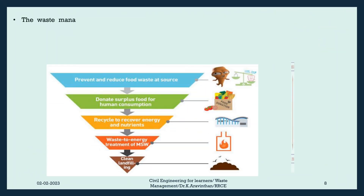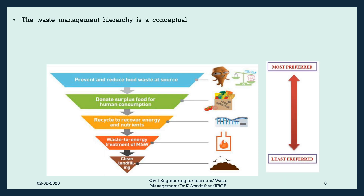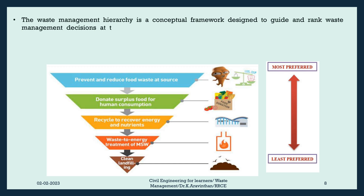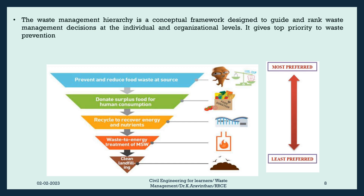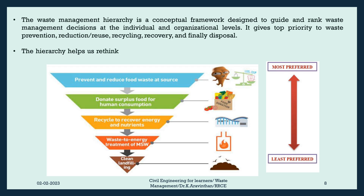The Waste Management Hierarchy is a conceptual framework designed to guide and rank waste management decisions at the individual and organizational levels. It gives top priority to waste prevention, reduction and reuse, recycling, recovery, and finally disposal. The hierarchy helps us rethink our relationship with waste based on five priorities ranked in terms of what's best for the environment.